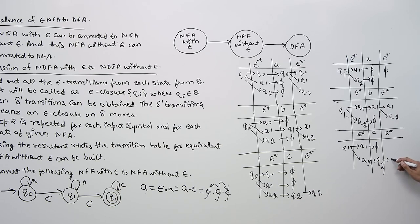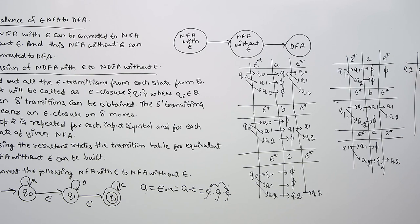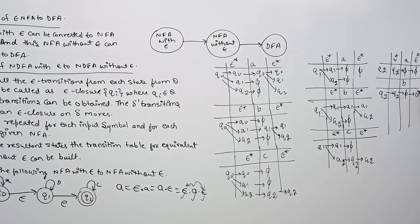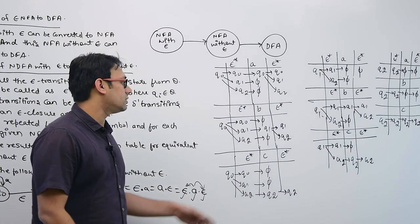Now make the same table for state Q2. The Epsilon closure of Q2 is Q2 itself. Seeing symbol A on Q2, you are not going anywhere, so it is Phi. For symbol B: Epsilon closure of Q2 is Q2; seeing symbol B you are not going anywhere, so it is Phi. For symbol C: Epsilon closure of Q2 is Q2; seeing symbol C you go to Q2, and Epsilon closure of Q2 is again Q2. So the result for C from Q2 is {Q2}.